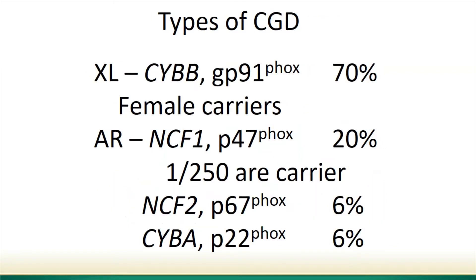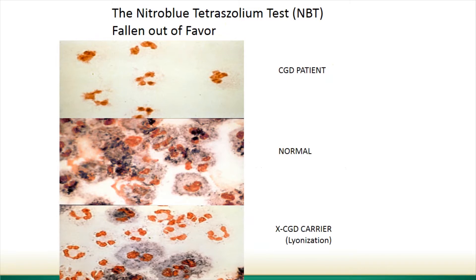X-linked CGD is the most common type. There are many cases of X-linked CGD where women are not carriers, so it doesn't mean 100% that a boy's mother or sisters are carriers, though we certainly want to check. For recessive CGD, p47-phox deficiency is the most common type, and about one in 250 people in the general population are carriers for a specific mutation in p47-phox.